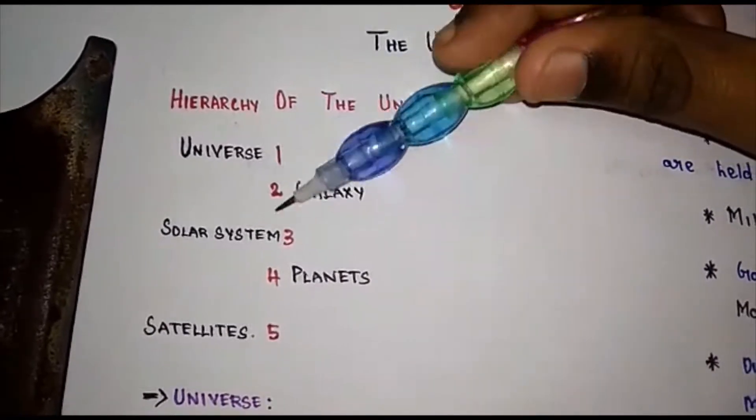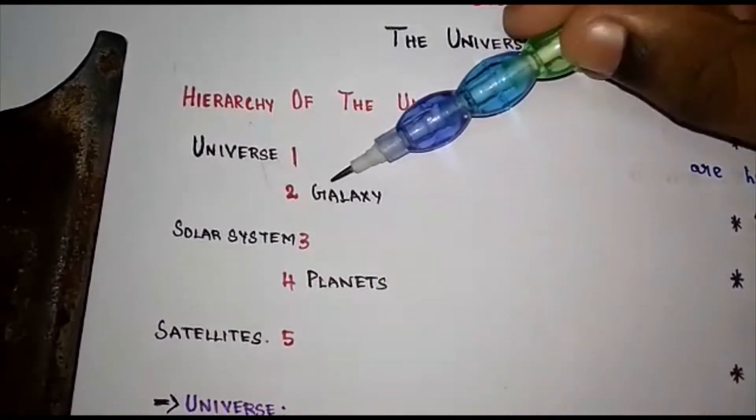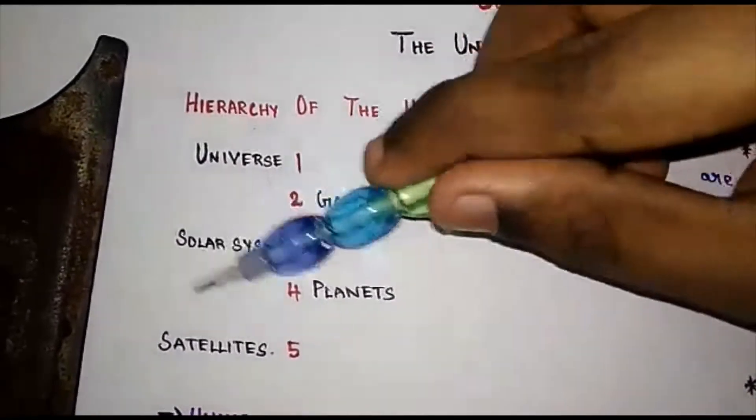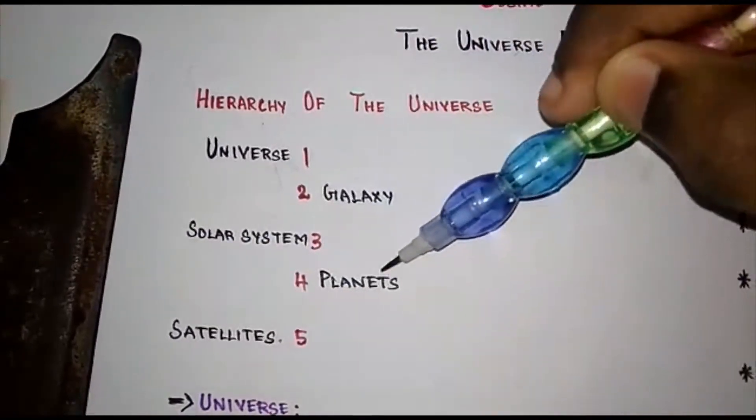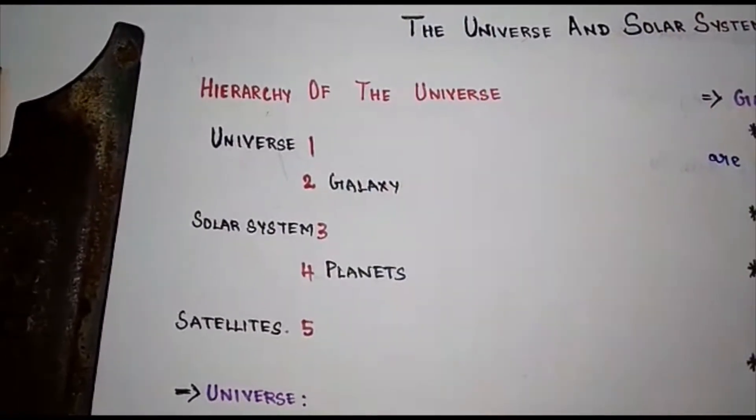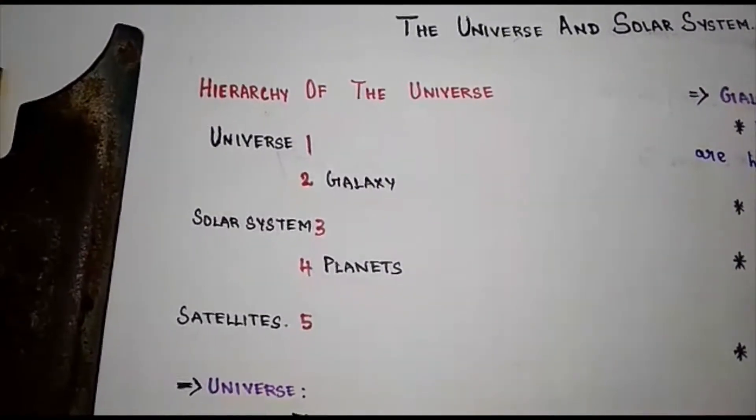First will be the universe, next will be a galaxy, then will be a solar system, then will be the planets, then it is the satellites. It is the hierarchy of the universe.